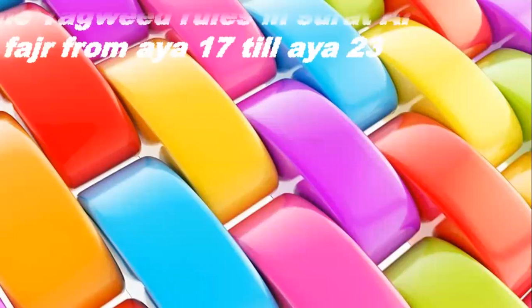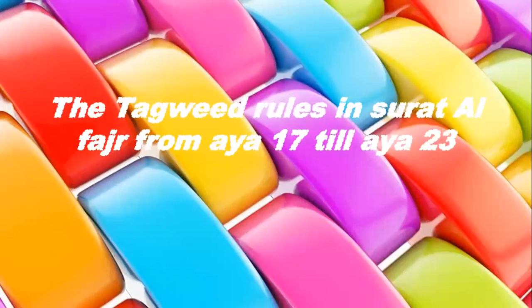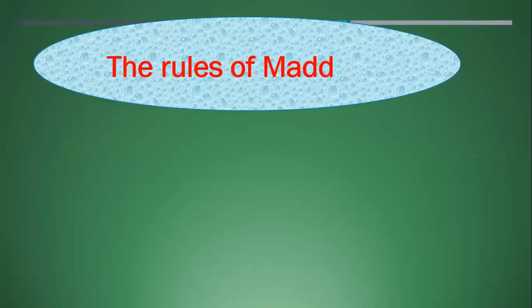Let's go to the last part in our class today to study the tajweed rules in Surah Al-Fajr from ayah seventeen till ayah twenty-three. Number one: the rules of Mad. Mad Tabi'i: two beats.